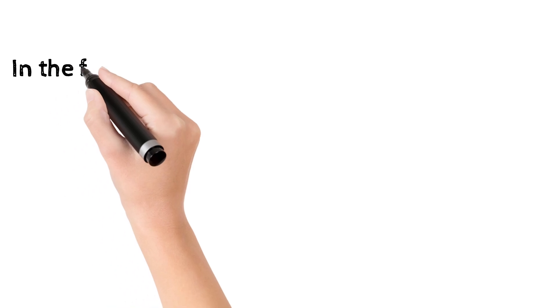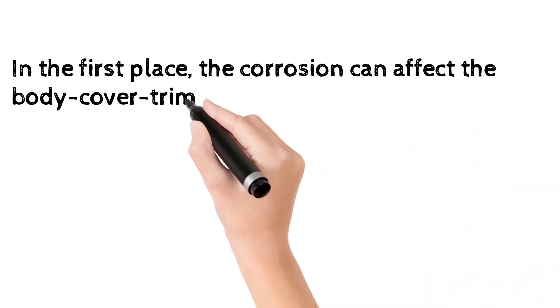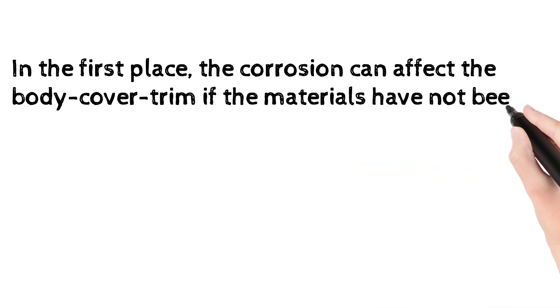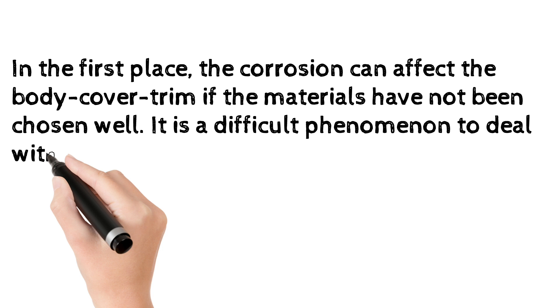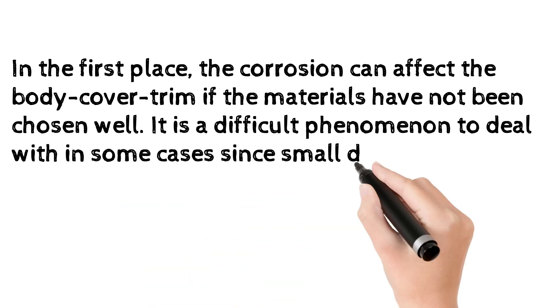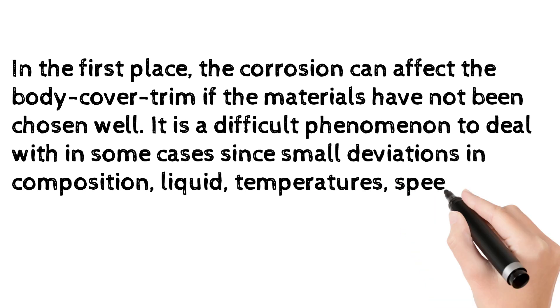Materials against corrosion. In the first place, the corrosion can affect the body cover trim if the materials have not been chosen well. It is a difficult phenomenon to deal with in some cases since small deviations in composition, liquid, temperatures, speed, etc. modify their aggressiveness.